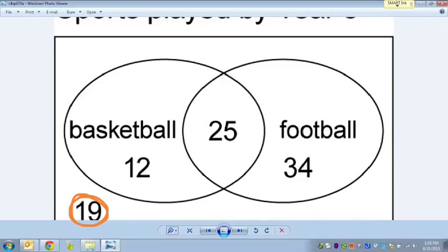And then you'll notice this number on the outside here, this 19. And that represents people who don't like basketball or football. They just don't care for either sport, which personally that offends me because I love both those sports. But again, it's a survey and I love honesty.